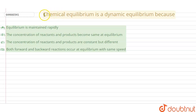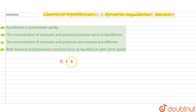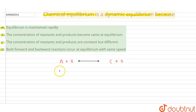Hello students, the given problem is: chemical equilibrium is a dynamic equilibrium because — and we are choosing which of the following options is correct. Let's write a reaction: A plus B gives C plus D, which is an equilibrium reaction. Here A and B are the reactants, and C and D are the products.